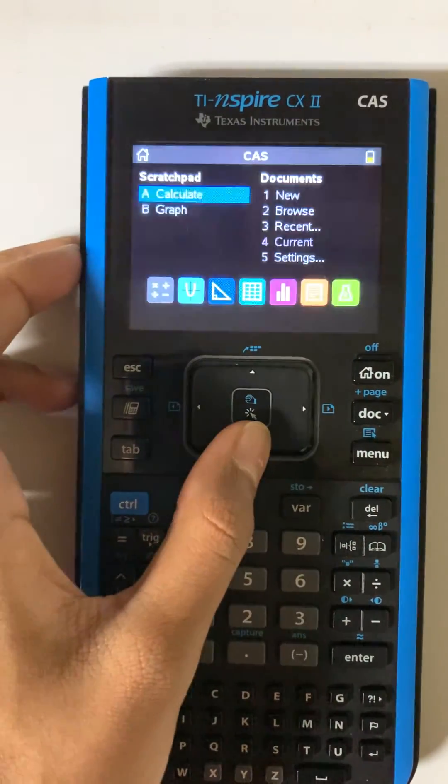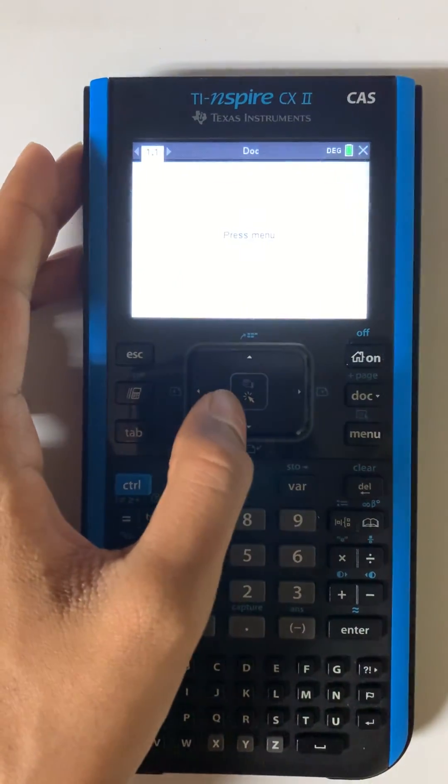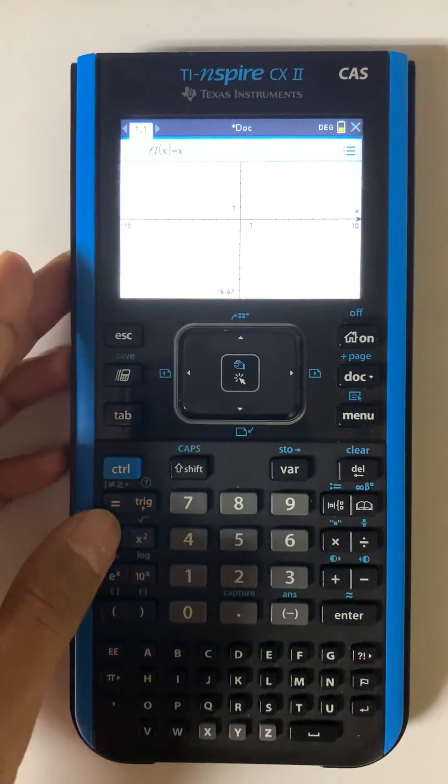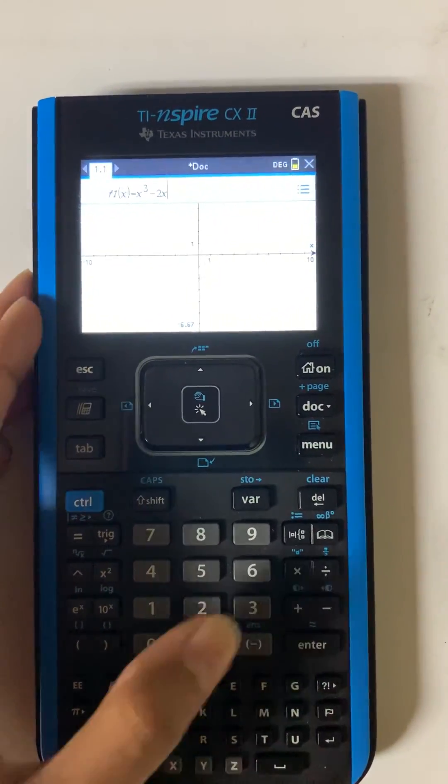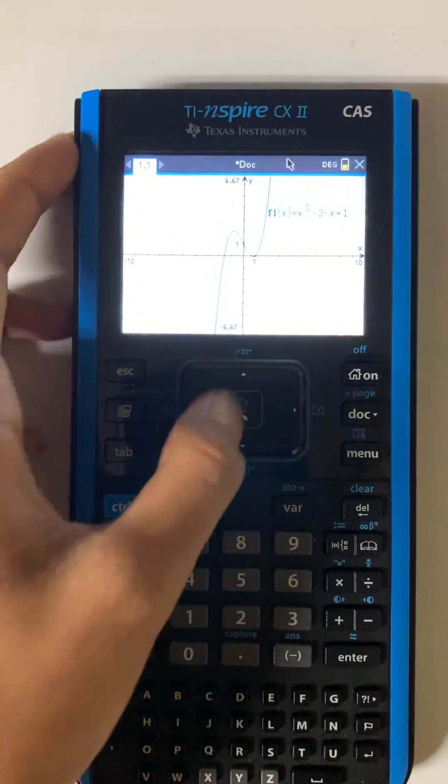The first step will be to go to the little parabola icon right by the triangle. Second, you'll enter the functions that you want to find the area between, and then the second function.